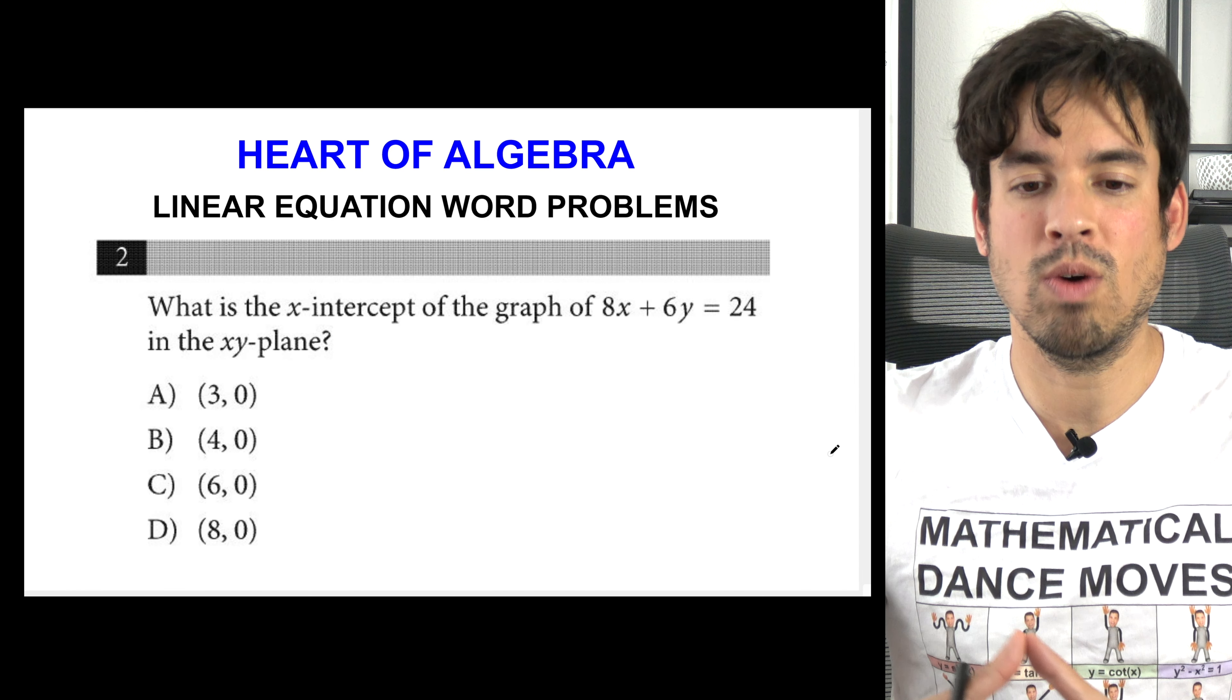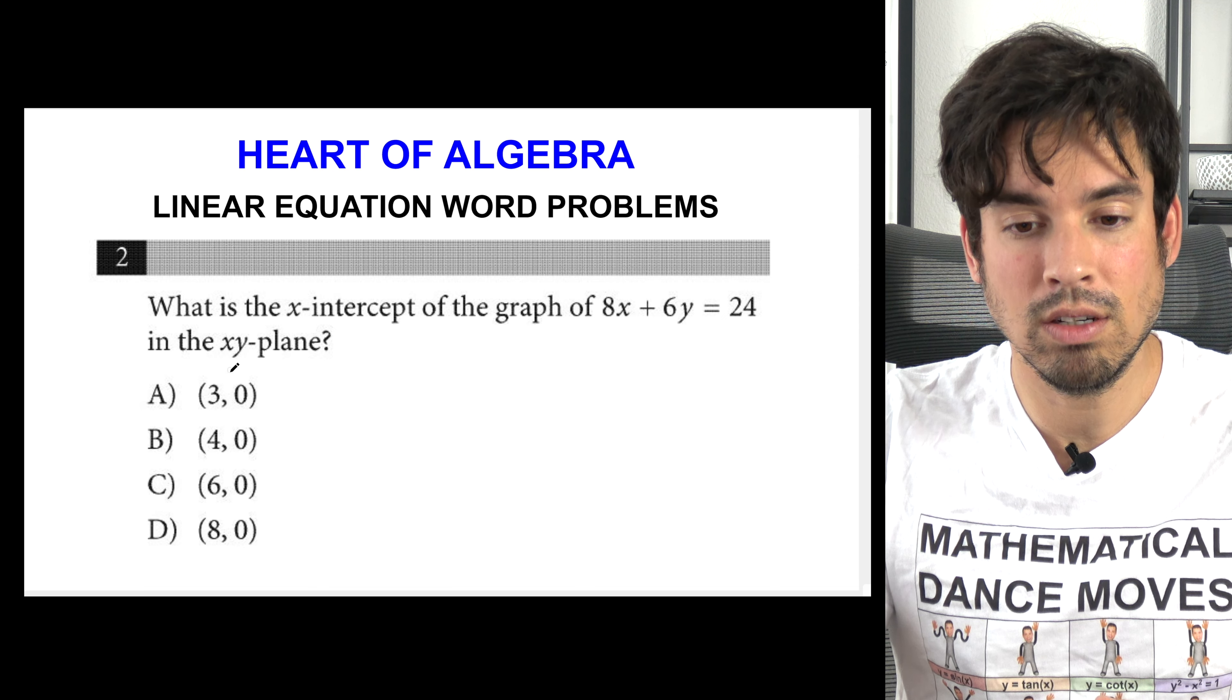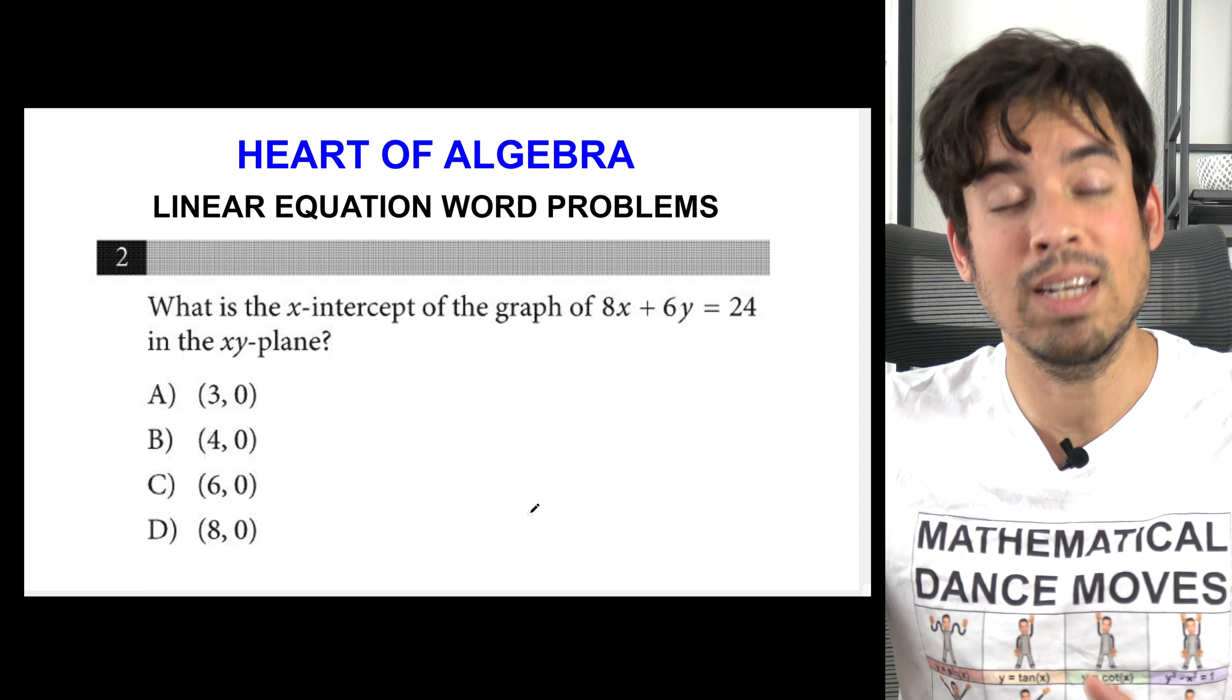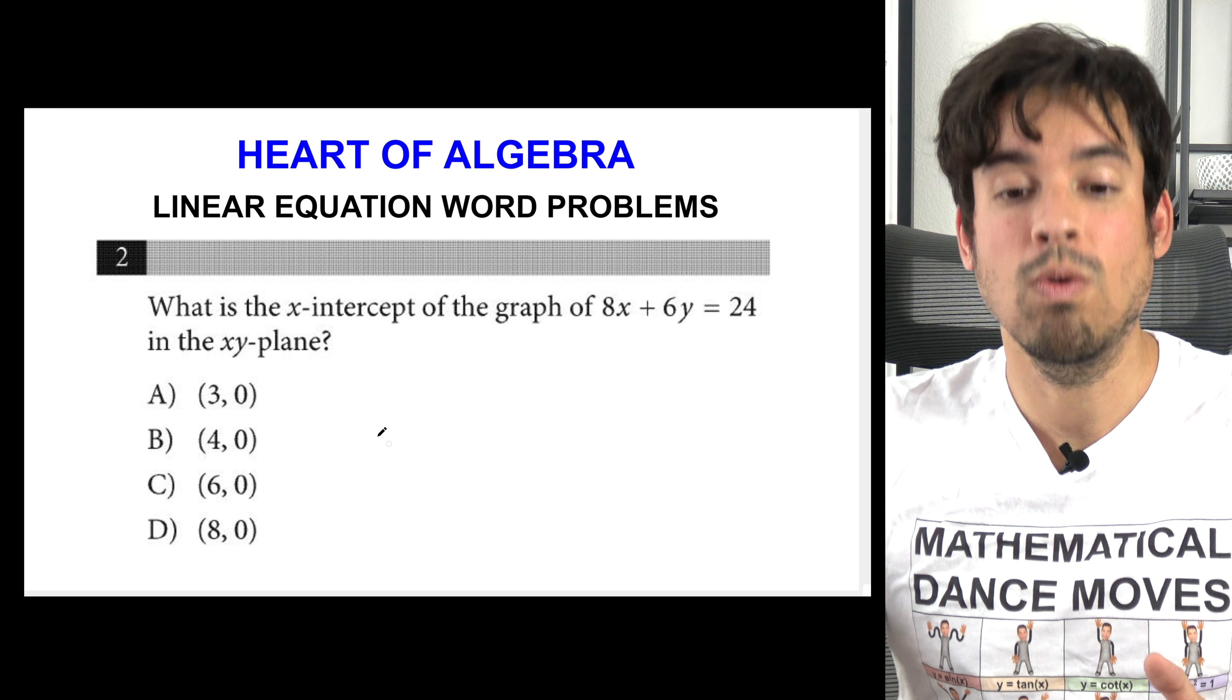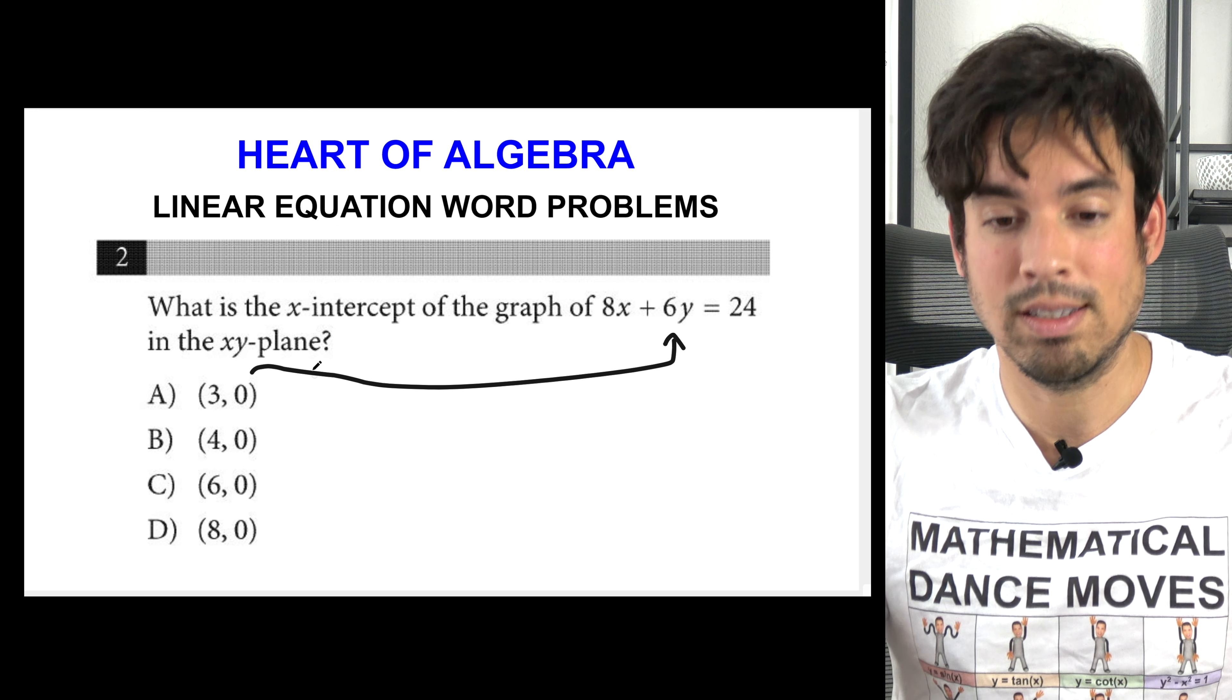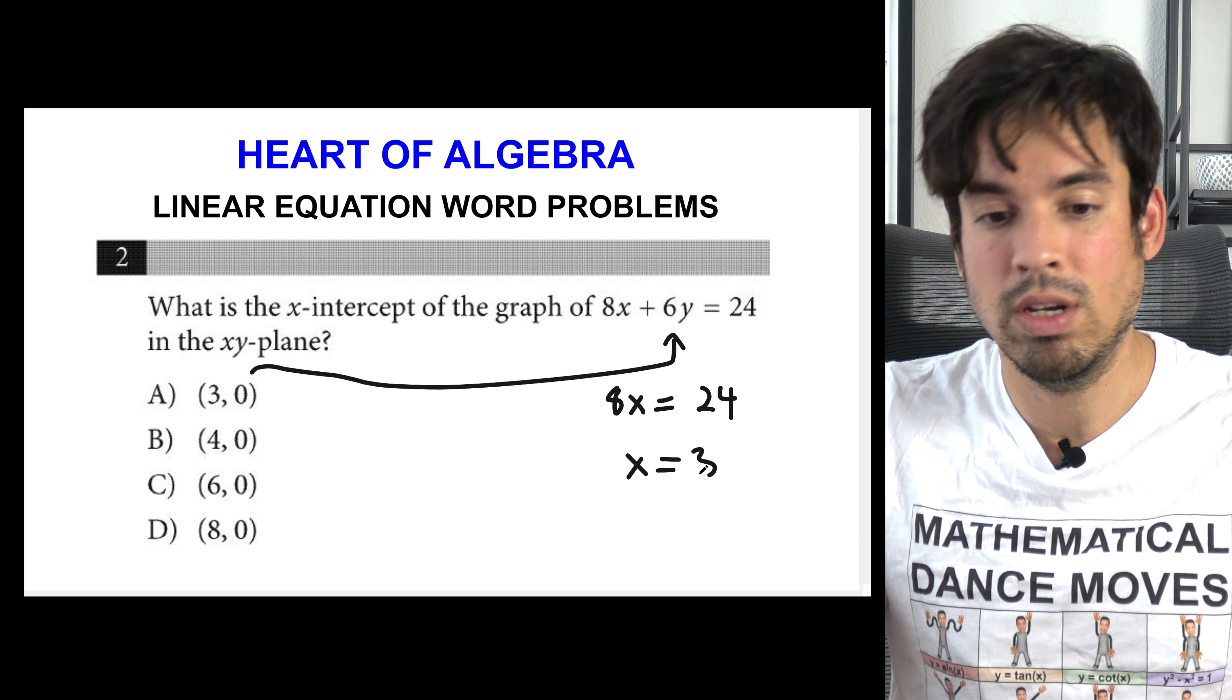This problem, the question is what is the x-intercept of the graph of 8x plus 6y equals 24 in the xy plane? First of all, the way the College Board is trying to help you here is if you look at the answer choices, every single choice has zero for the y value. That's no coincidence because x-intercepts always have zero as the y value. But it's really nice that they gave it to you right there in the answer choices. So what you can do here, even if you forget maybe what's an x-intercept, all you got to do is plug in zero for y because they all have zero. And you'll see it becomes 8x equals 24, x therefore equals 3, A is the winner, boom done.